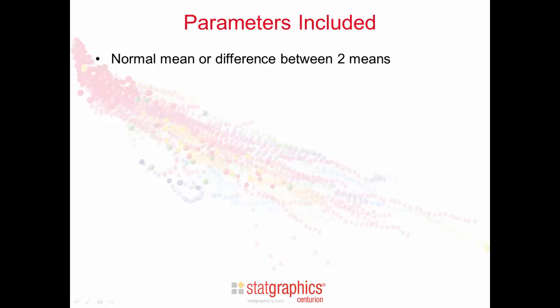The statlet can determine a number of observations needed to estimate or test a normal mean or the difference between two means, a normal standard deviation or the ratio of two standard deviations.